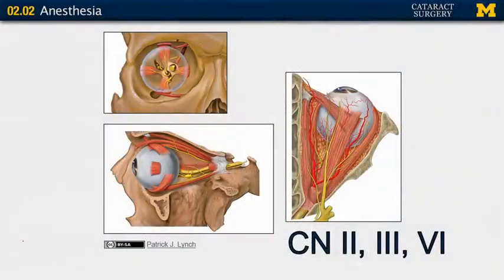In order to know the difference between the local anesthetics, it is important to understand some anatomy of the eye and orbit. You need to know the difference between the intraconal space and the extraconal space. The intraconal space is formed by the four extraocular muscles and the fascia that connects them. It starts posteriorly at the annulus of Zinn and extends anteriorly to the back of the globe. The extraconal space is inside the orbit but outside the muscle cone. Blood vessels and nerves, in particular cranial nerves two, three, and six, course through the muscle cone.